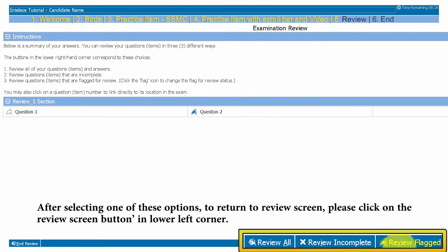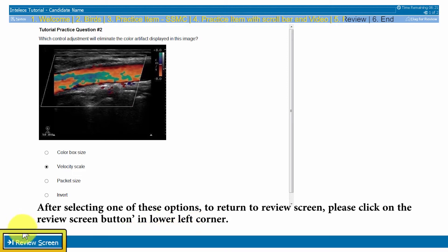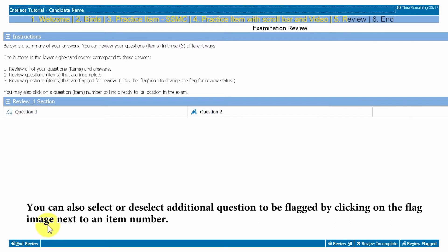After selecting one of these options, to return to the review screen, please click on the review screen button in the lower left corner. You can also select or deselect additional questions to be flagged by clicking on the flag image next to an item number.